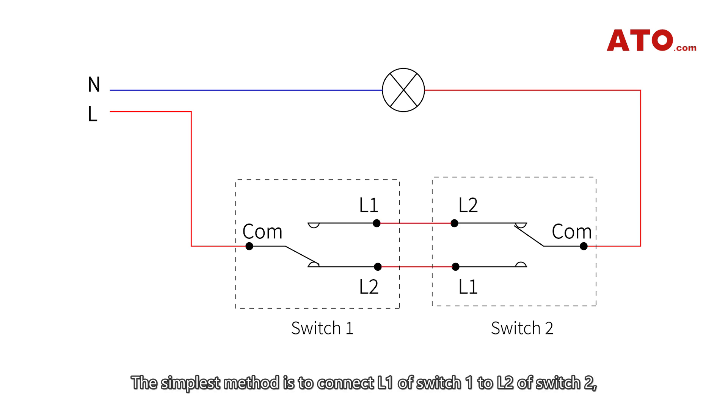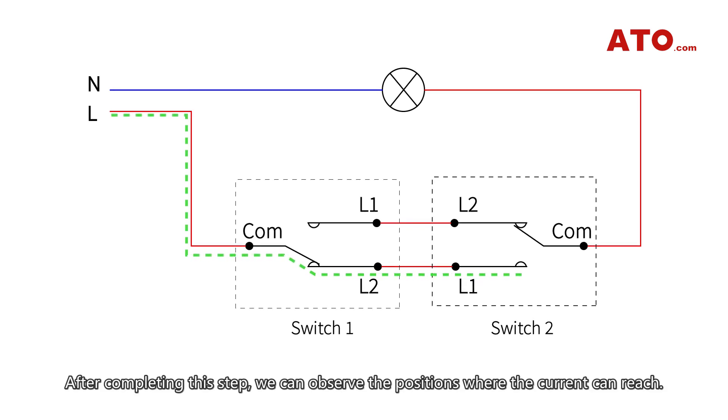The simplest method is to connect L1 of switch one to L2 of switch two and connect L2 of switch one to L1 of switch two. After completing this step we can observe the positions where the current can reach.